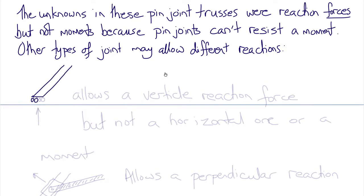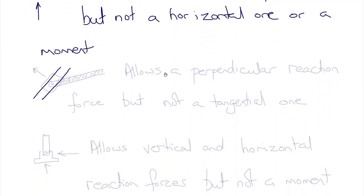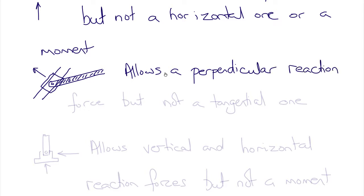A support with rollers on a fixed surface allows for a vertical reaction force, but not a horizontal force or a moment — so in 2D there would be only one reaction, and similarly in 3D. A collar sliding on a shaft with a pinned attachment also allows only one reaction force perpendicular to the shaft, but not a tangential reaction force or a moment, again in 2D.